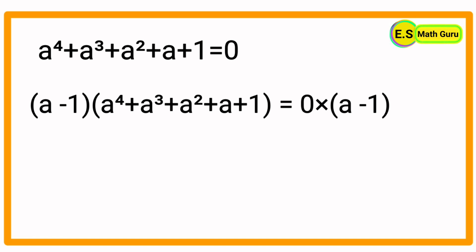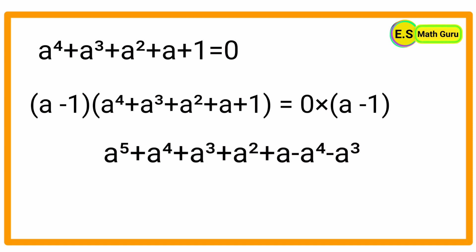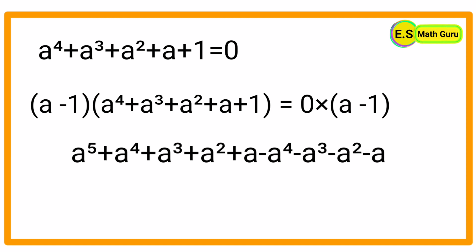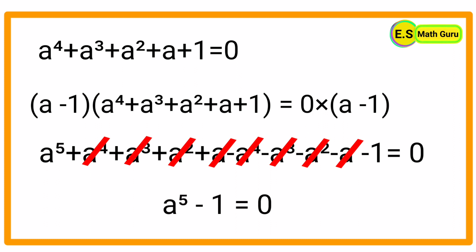Then we get a⁵ + a⁴ + a³ + a² + a − a⁴ − a³ − a² − a − 1 = 0. Now let us simplify by canceling like terms: +a⁴ with −a⁴, +a³ with −a³, +a² with −a², and +a with −a. It remains: a⁵ − 1 = 0.